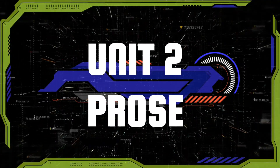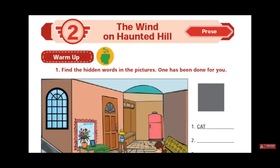Take your e-book and turn to page number 25. The title of the lesson is 'The Wind on Haunted Hill,' written by Ruskin Bond. Now we will see about the author. Ruskin Bond is a story writer, novelist, and poet.